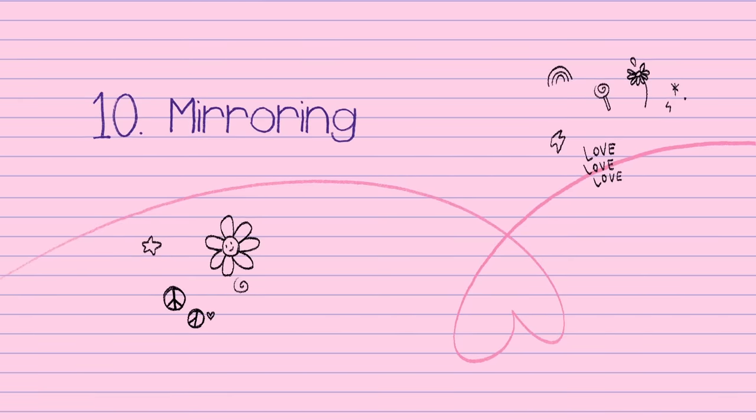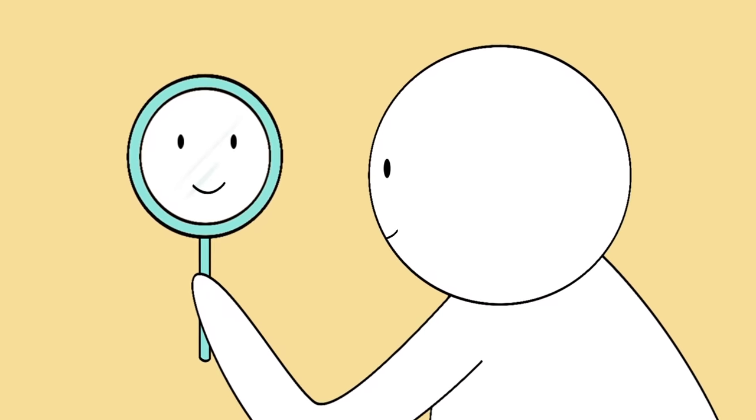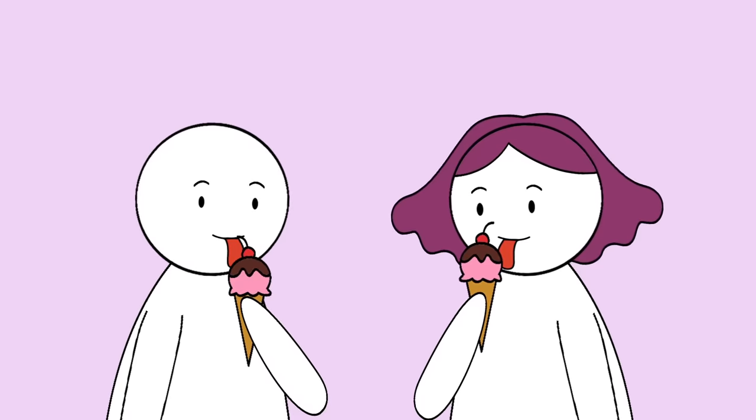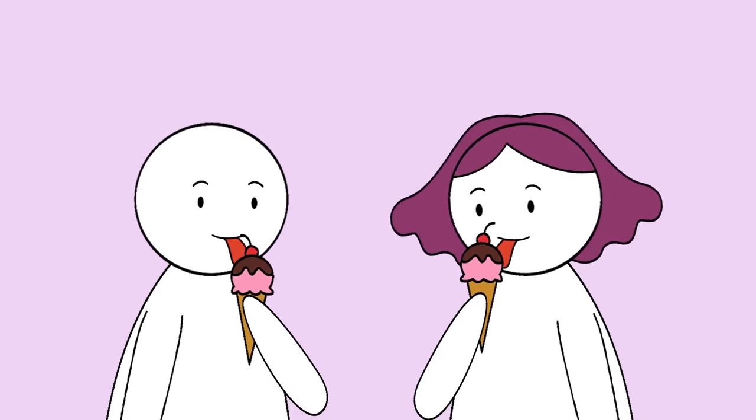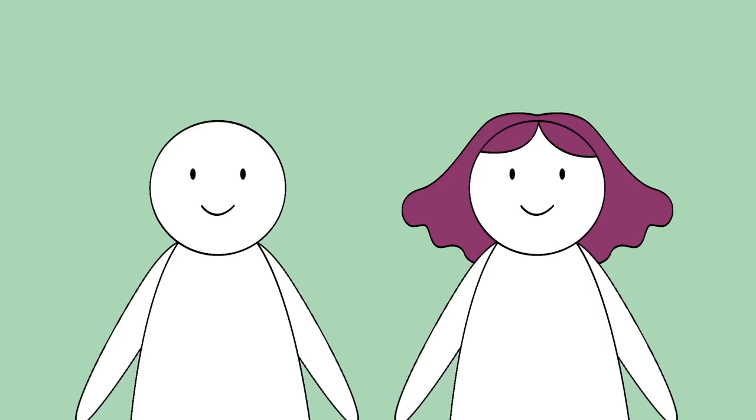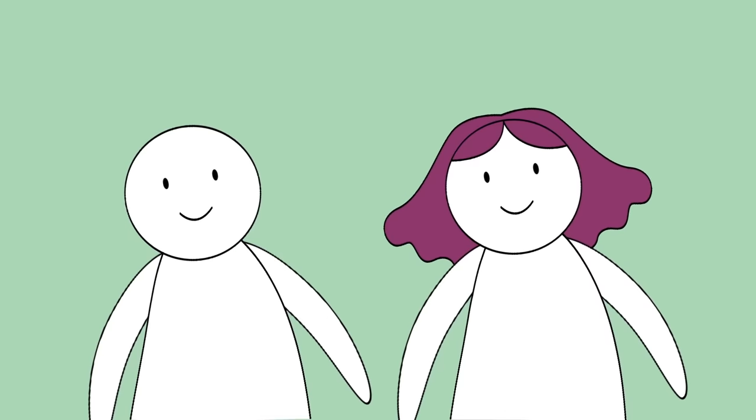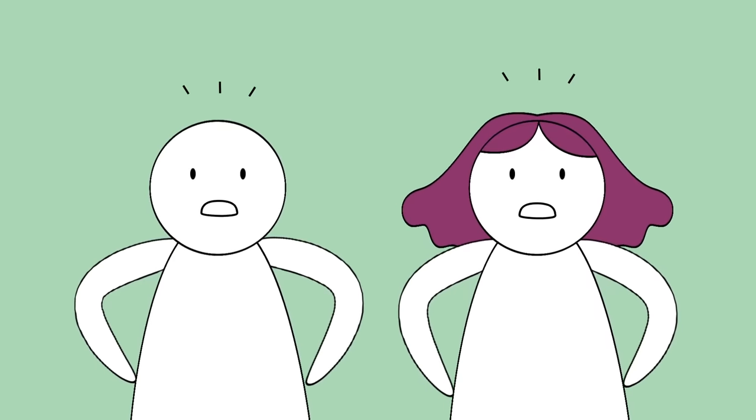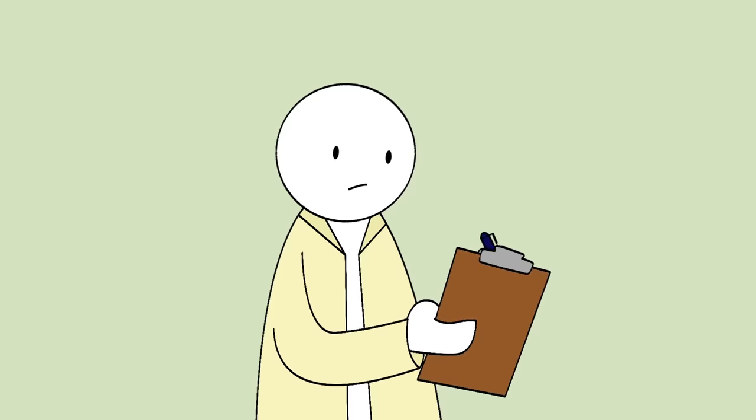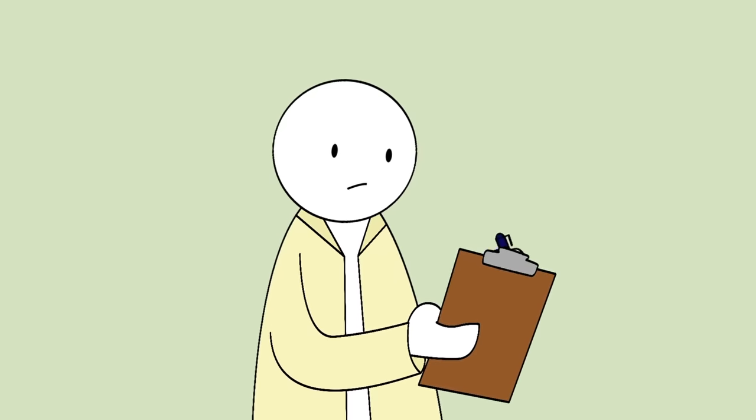10. Mirroring. Another big sign of attraction is mirroring. If you look closely, you might find that your crush seems to be copying your movements and behaviors in a subtle way. It might be tilting their head to the side in the same way as you, or adopting a similar posture. Mirroring has been studied quite intensively in psychological research.